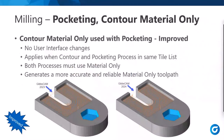Another improvement is to Contour Material Only when used with pocketing. There are no user interface changes. This applies when a contour and pocketing process in the same tile list are both using material only. In GibbsCAM 2023 there was quite a bit of air cutting over a gap. Simply opening the part in GibbsCAM 2024 and doing a redo shows the tool path now recognizes that gap and does a rapid move over it.